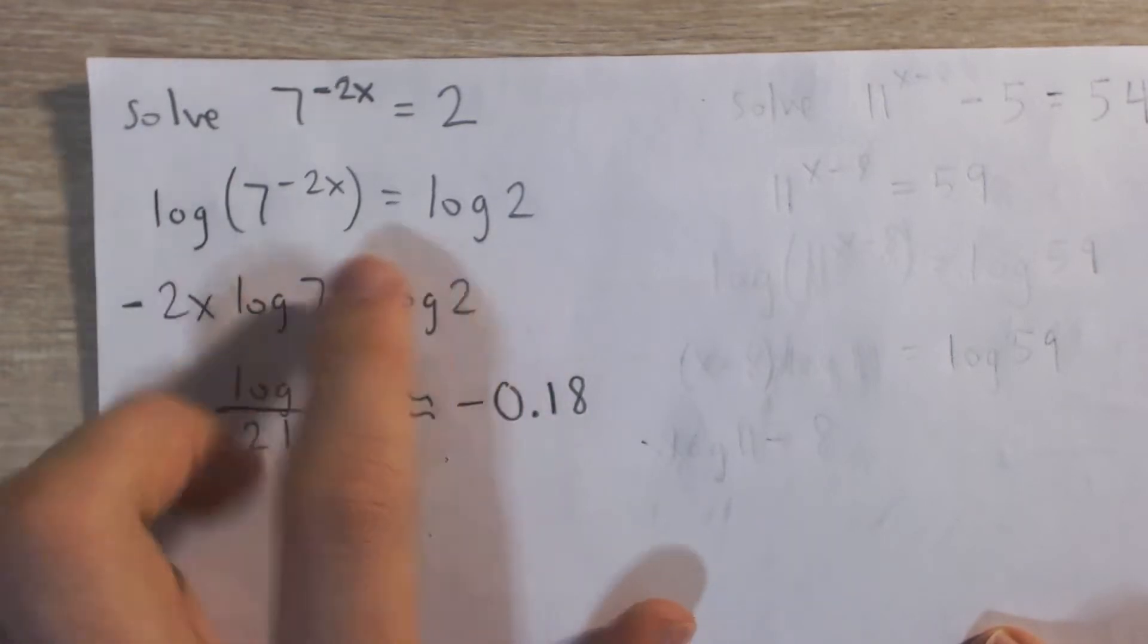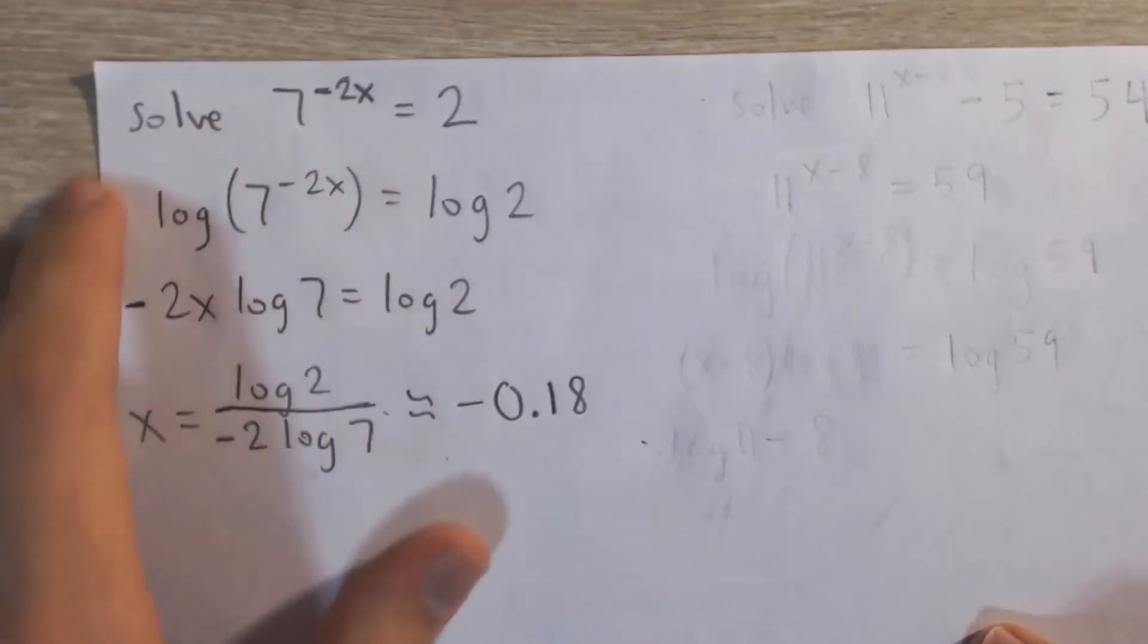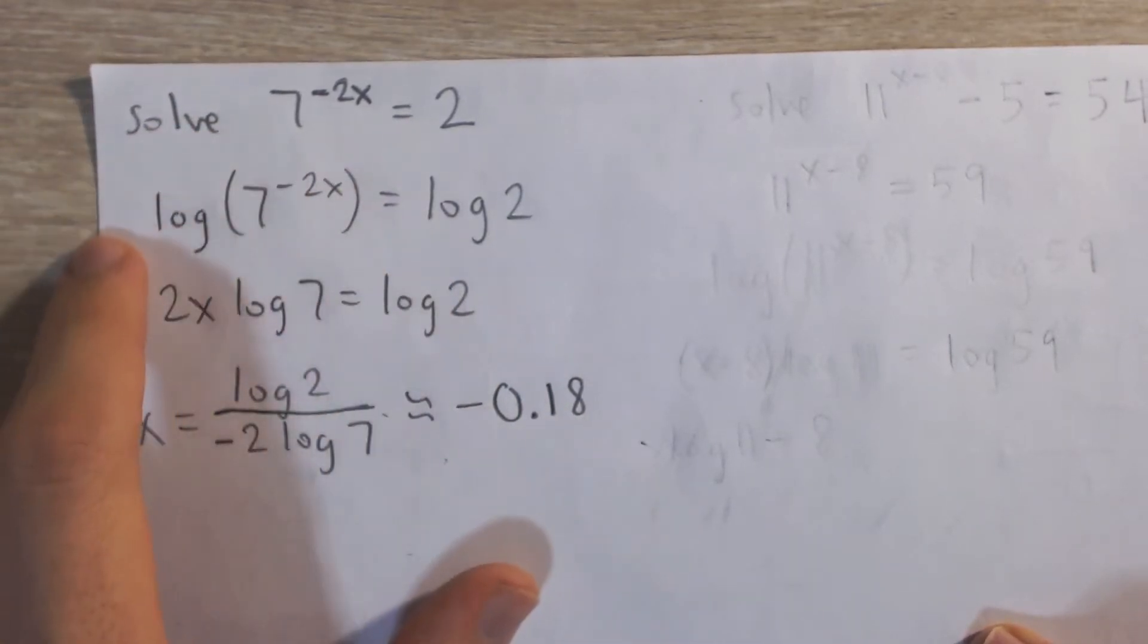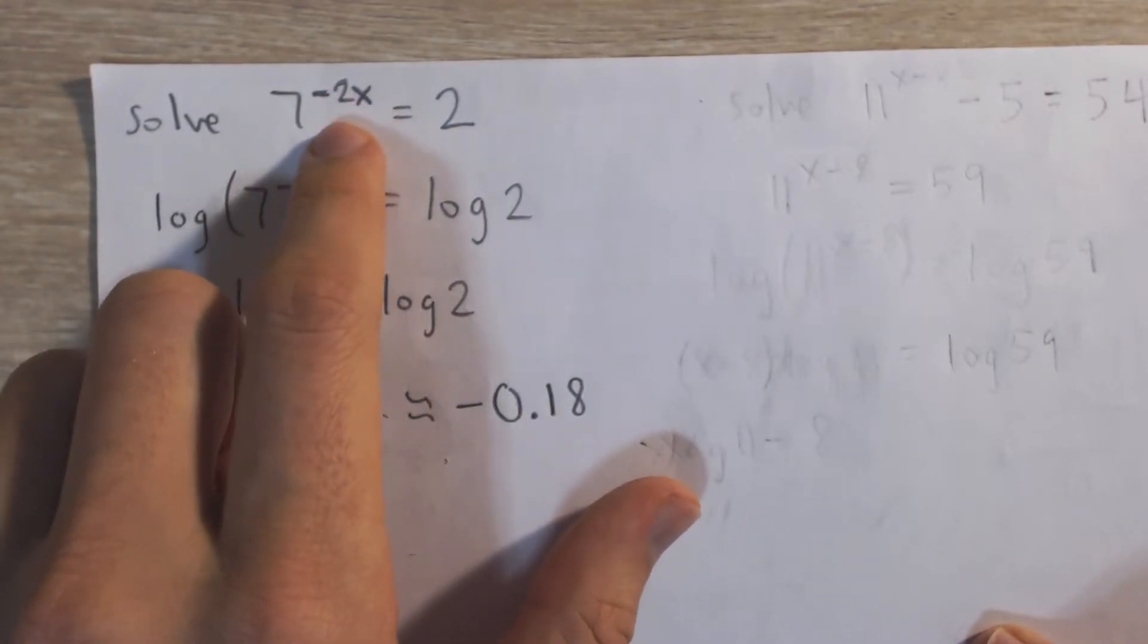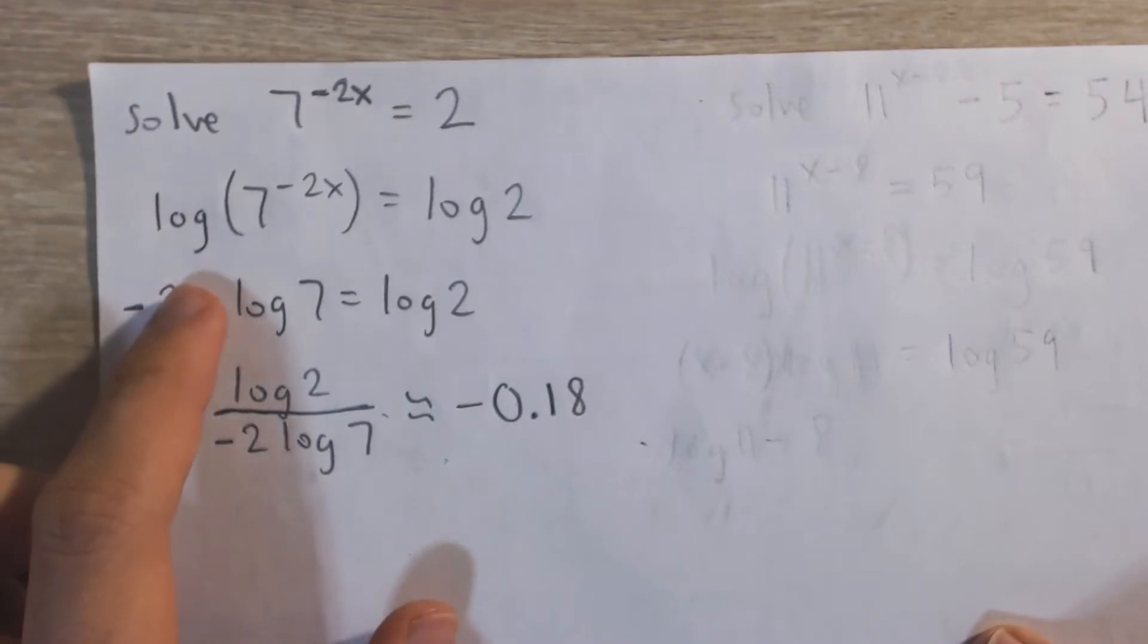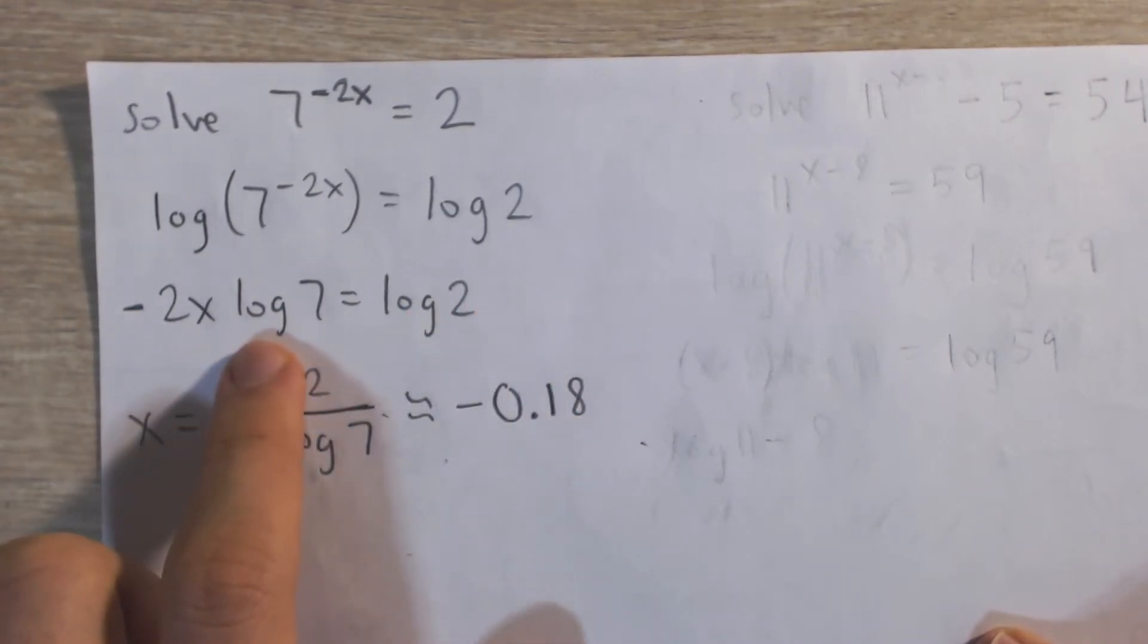What that allows us to do is bring this power from an exponent out front as a coefficient. Because how do we solve for x if it's in this power? It's kind of tricky. But we can use the power law of logarithms to bring this power down to the front. And now you can see it's almost like we have a linear equation, but we have some logs.